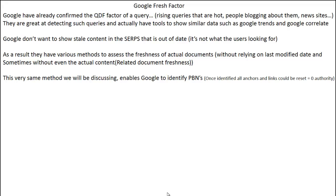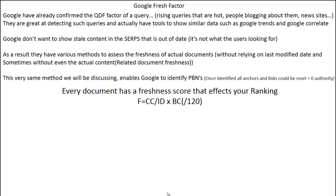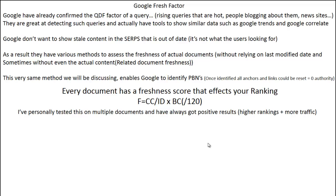This is known as related document freshness. This very same method enables Google to identify private blog networks. Once they identify these private blog networks, all the anchor text and links pointing to them could be reset, which means you'd have zero authority for those PBNs. Every document has a freshness score that affects your ranking. I've personally tested this freshness factor on multiple documents and have always got positive results — always seen higher rankings and more traffic.